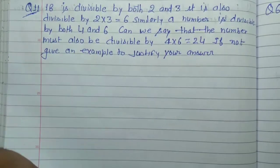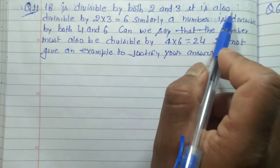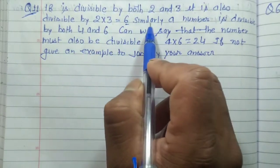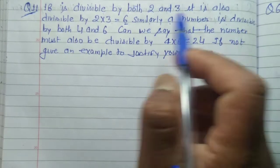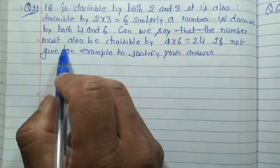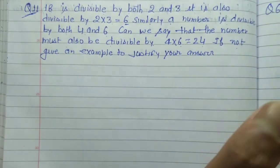18 is divisible by both 2 and 3, and it is also divisible by 2 × 3 = 6. Similarly, a number is divisible by both 4 and 6. Can we say that the number must also be divisible by 4 × 6 = 24? If not, give an example to justify your answer.